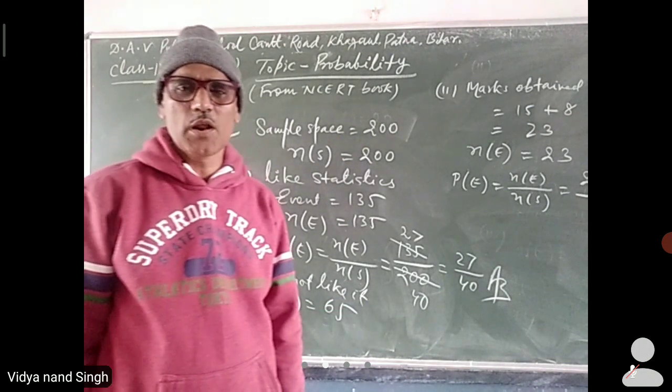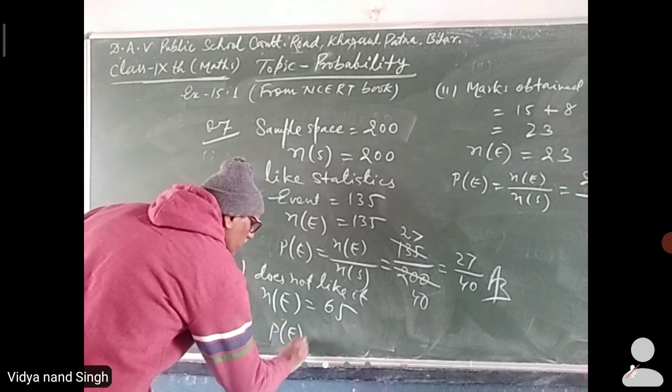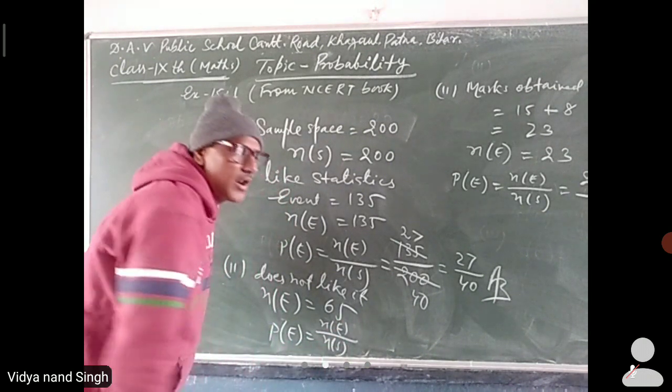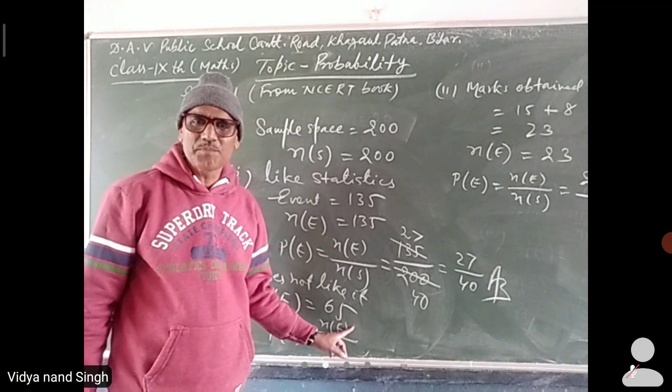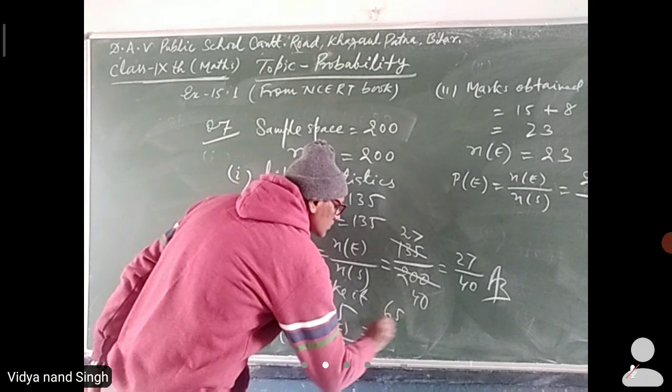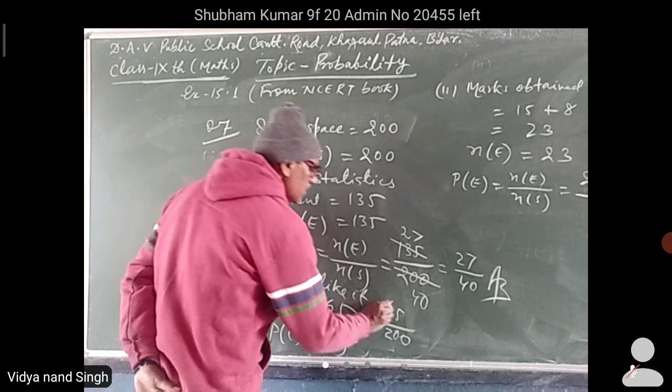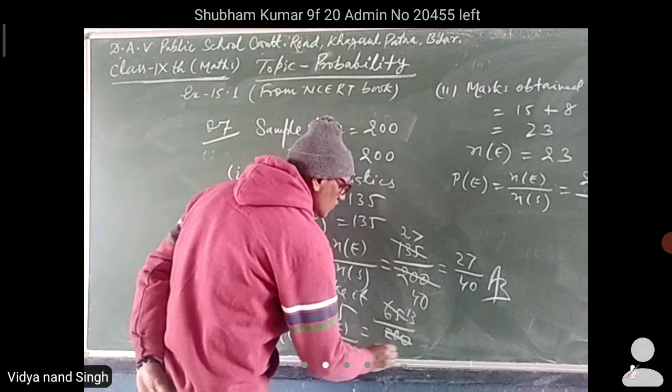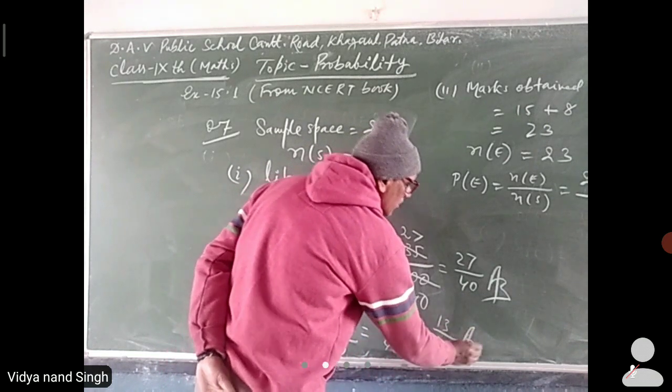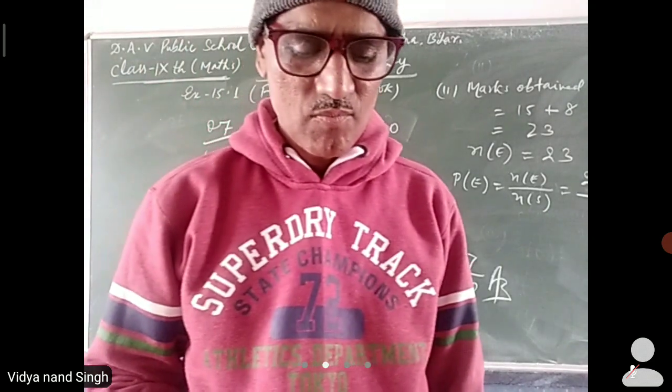Number of event is 65. Number of E by number of S: 65 divided by 200. Simplifying, 30 by 40.